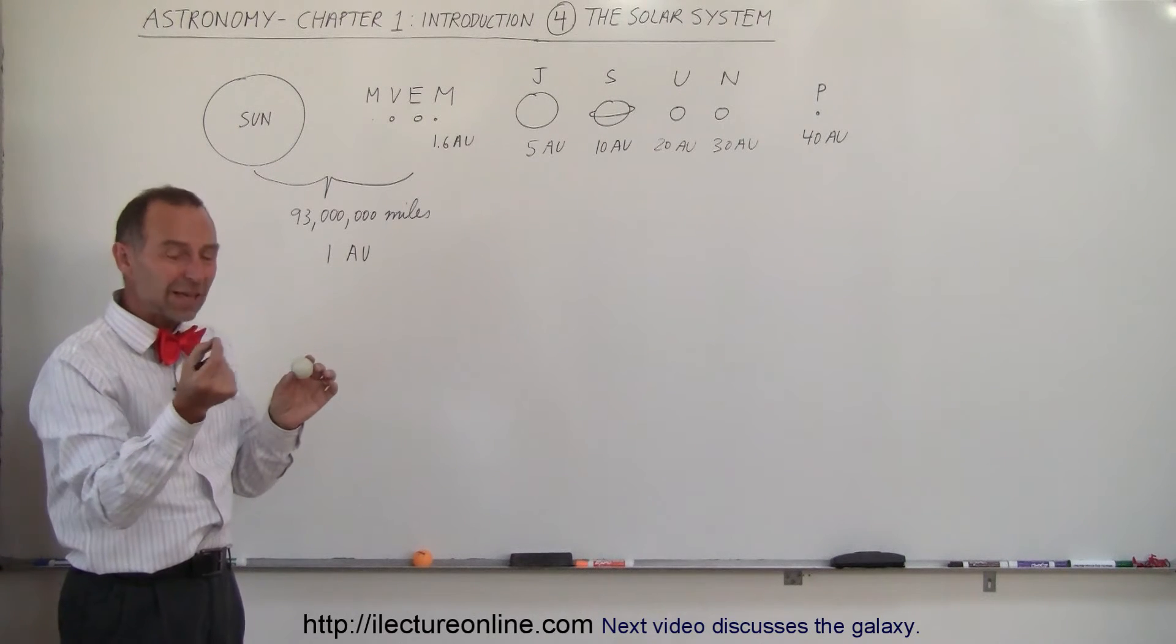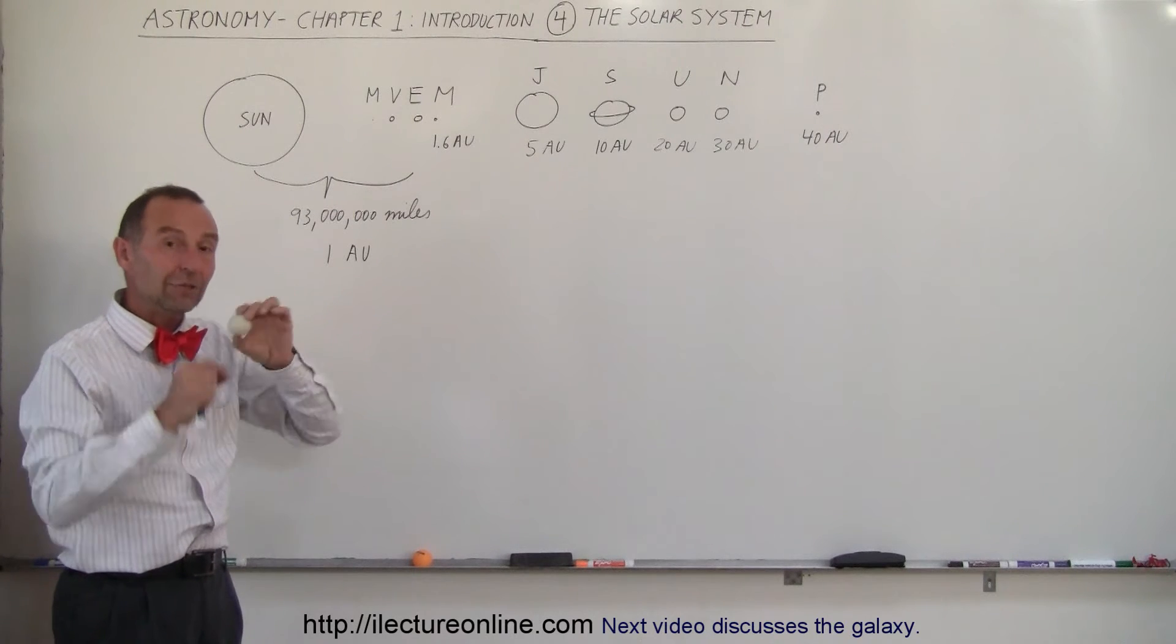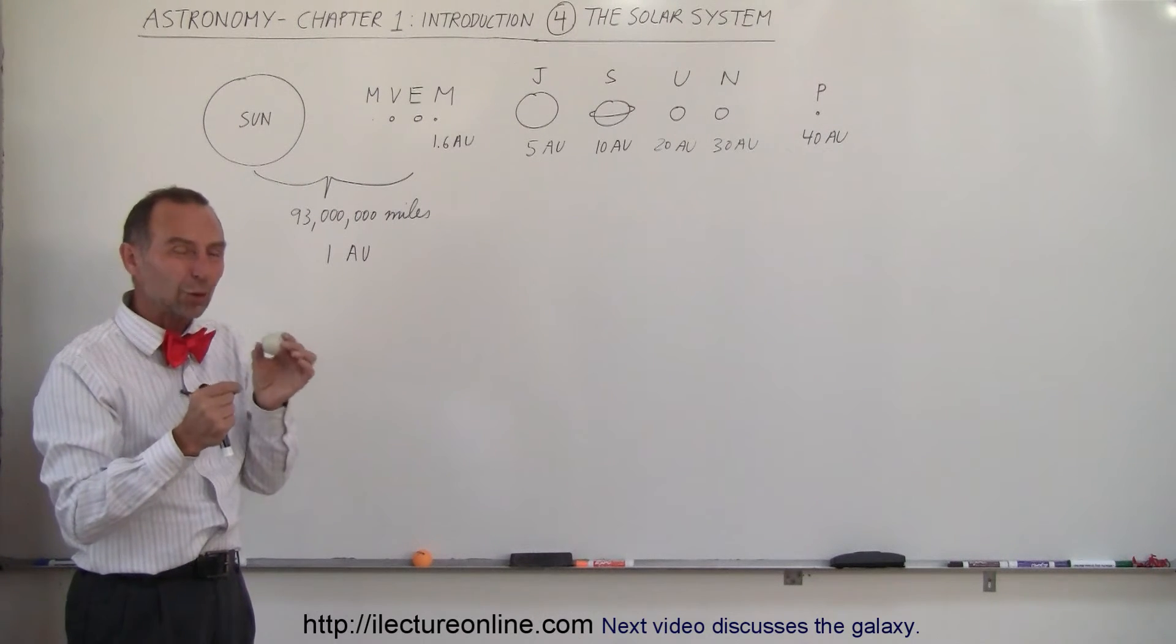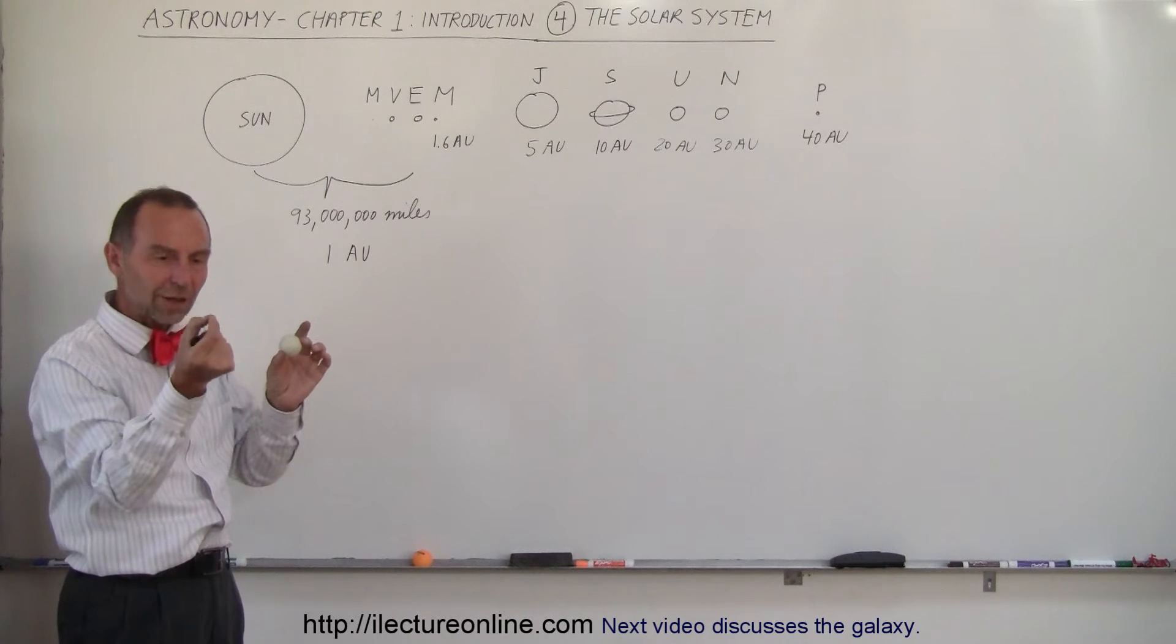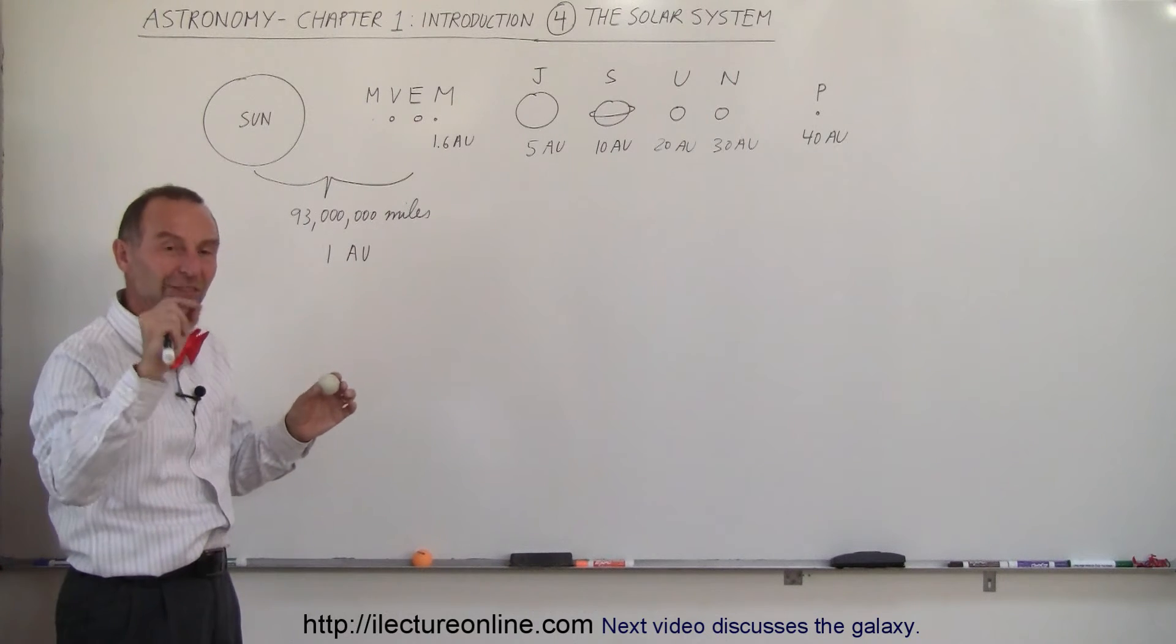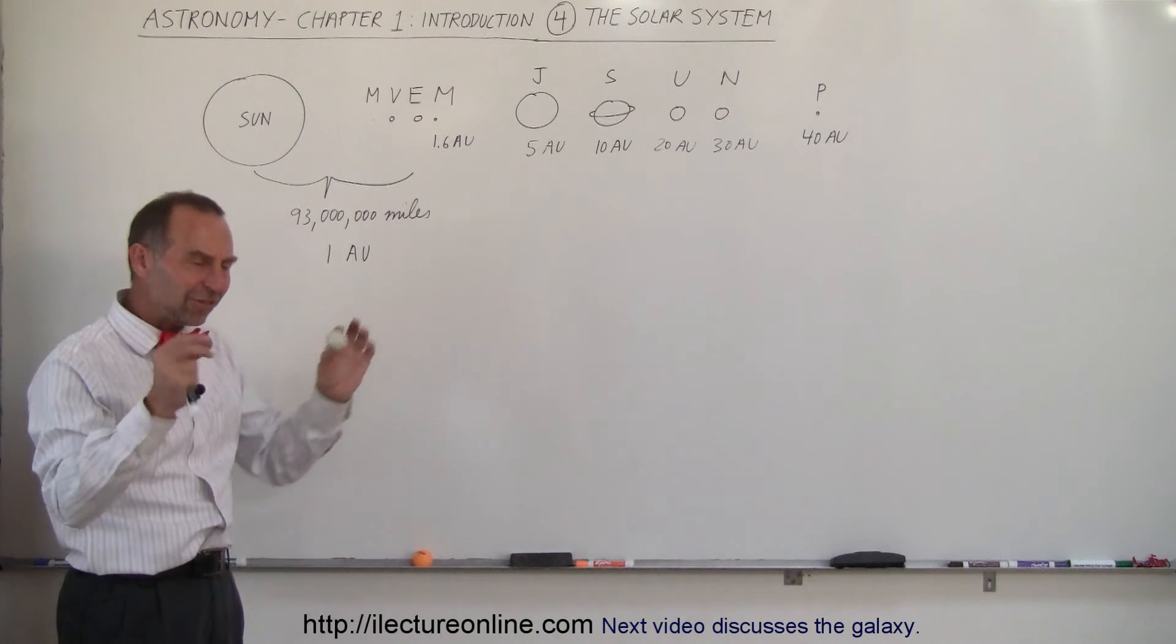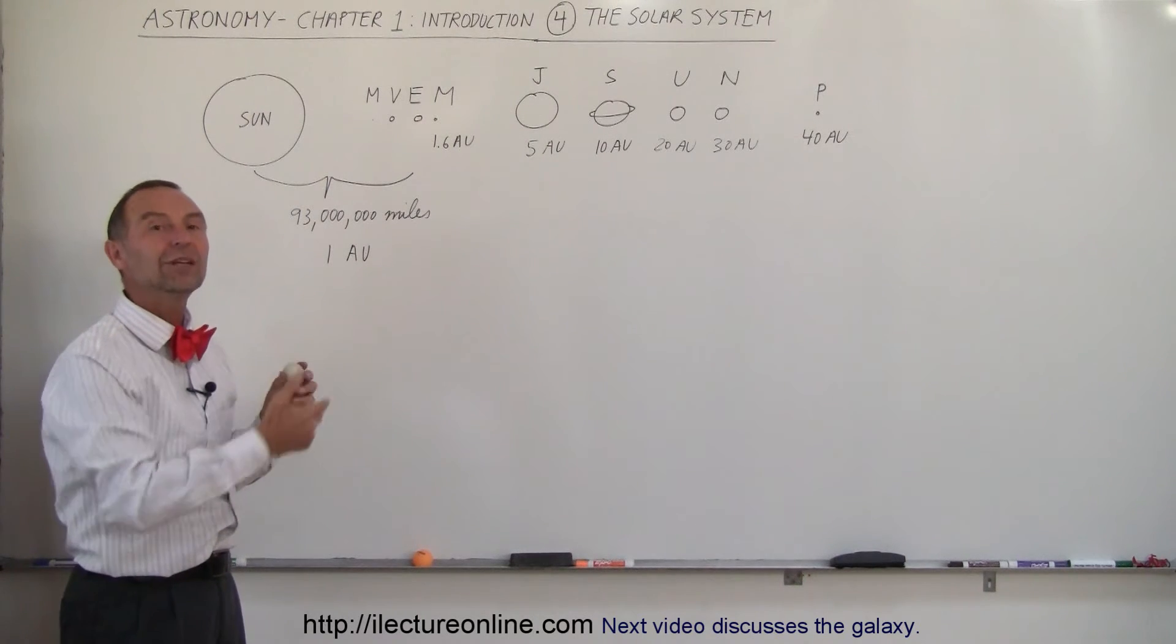Well, it turns out the Earth would be probably smaller than a grain of sand. Because the Sun in volume is about a million or over a million times the size of the Earth. So imagine a million grains of sand fitted into this ball. That would be about the ratio of the size of the Earth to the size of the Sun. And at this size ratio, the Earth would be almost 100 feet away.